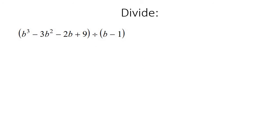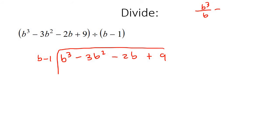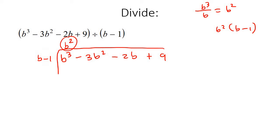Let's do another example. We're going to say b³ take away 3b squared take away 2b plus 9, divided by b take away 1. We start with the highest power here — b³ — and the highest power here — b. We divide: b³ divided by b is b squared. So we put b squared at the top. Then we take that term and multiply it, giving us b³ take away b squared. We switch the signs — negative then positive — and add: negative 3b squared plus b squared is negative 2.